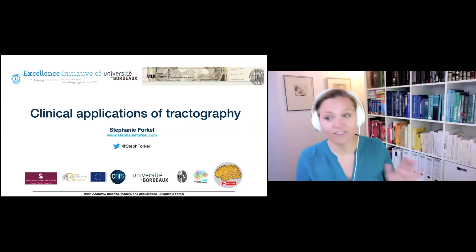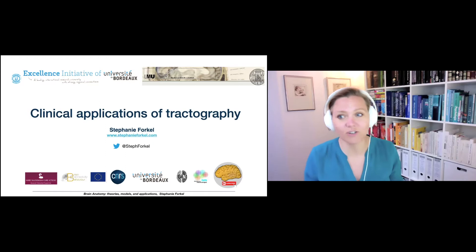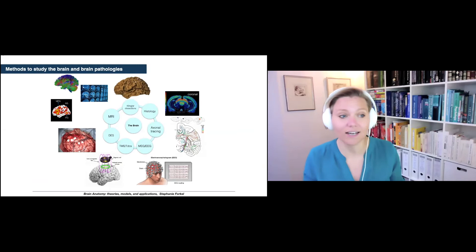So what can we do with tractography in the clinic? Now you're all experts of how to track, but let's step back and actually look at the methods that we have available to us to study the brain and brain pathologies. In the top we have clinical dissections which you heard about earlier today, we have histological methods, we have axonal tracing which is also a method to look at connectional anatomy but again post-mortem and usually in animals, monkeys mostly for ethical reasons. We have MEG and EEG methods, TMS, tDCS, we have direct electrical cortical stimulation, and we have MRI.